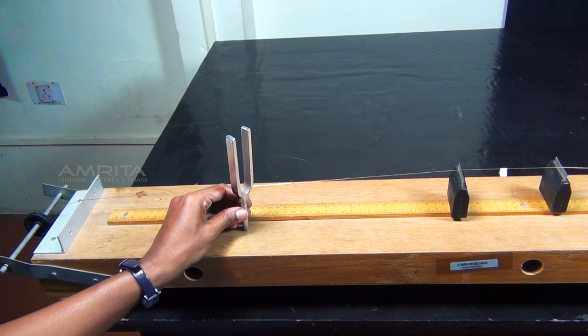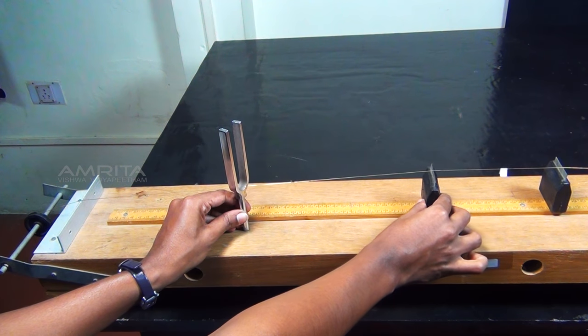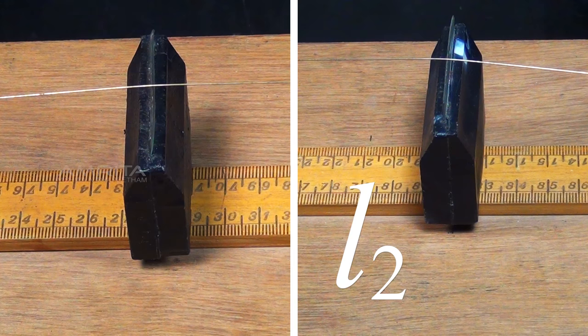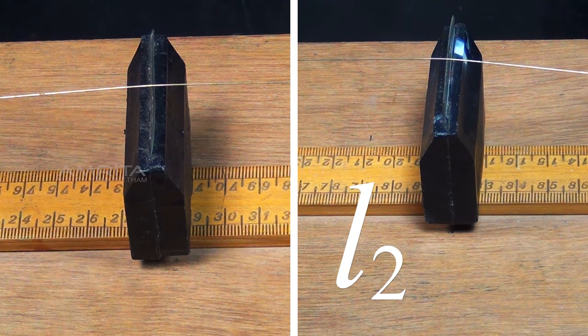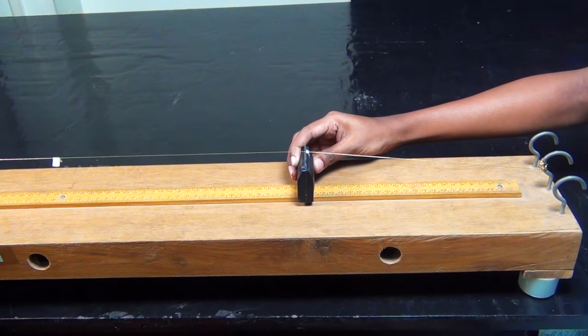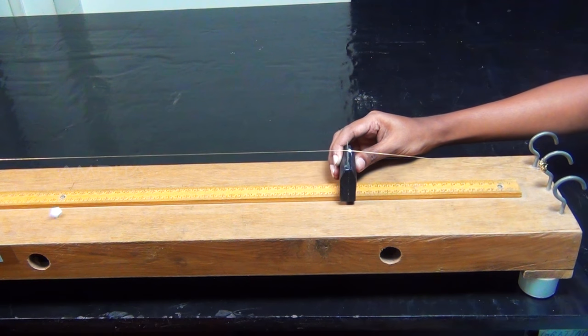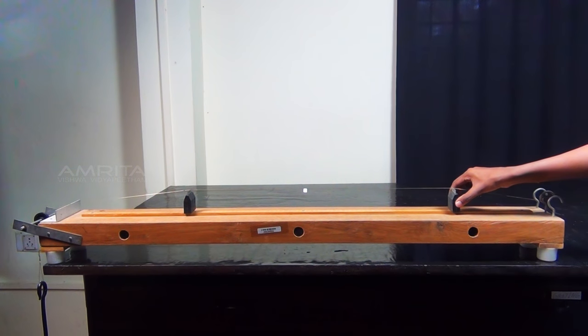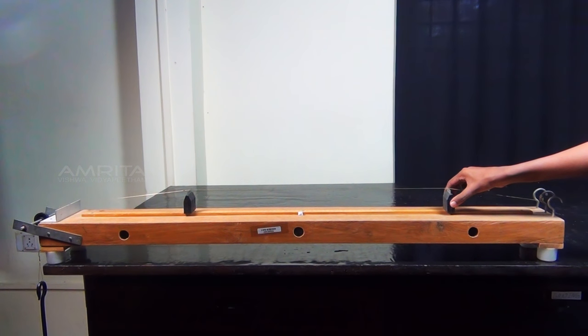Now, bring the bridges closer and then slowly increase the length of the string till the paper rider falls. The corresponding length is noted as L2. The mean value of L1 and L2 gives the resonant length L. Repeat the experiment for tuning forks of other frequencies and the resonant length is calculated in each case.